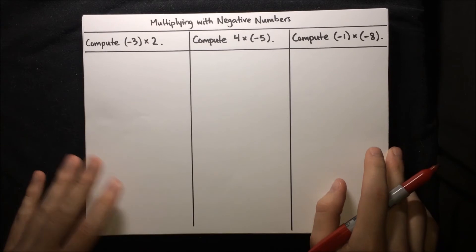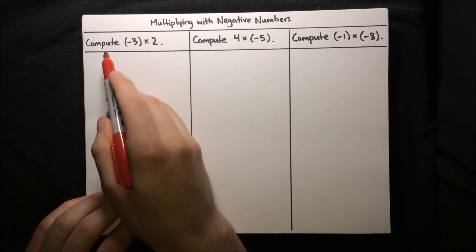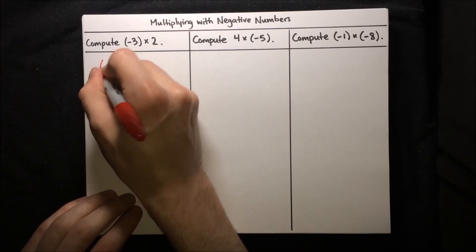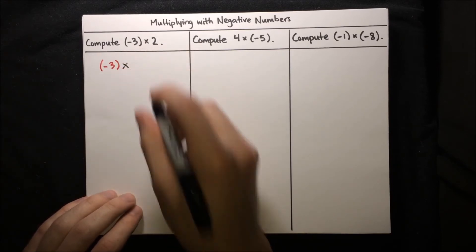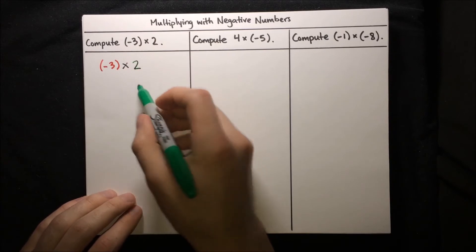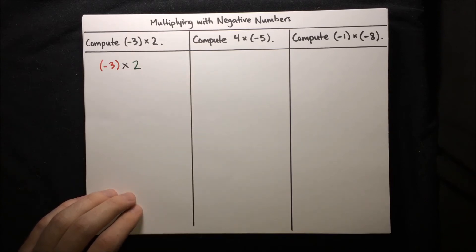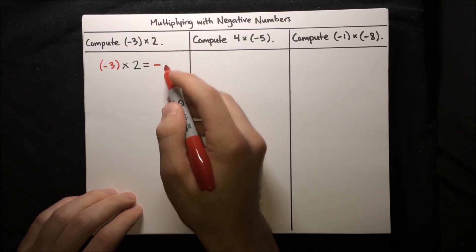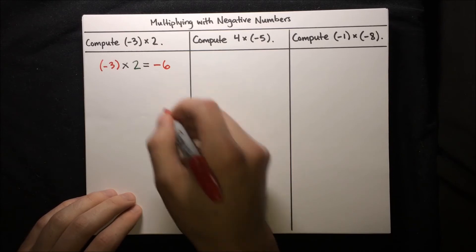Let's do some practice multiplying negative numbers. First, compute negative 3 times 2. Negative 3 is negative and 2 is positive. There's only one negative, so nothing cancels it — the result is negative. The numeric part is just 3 times 2, which is 6. So negative 3 times 2 equals negative 6.